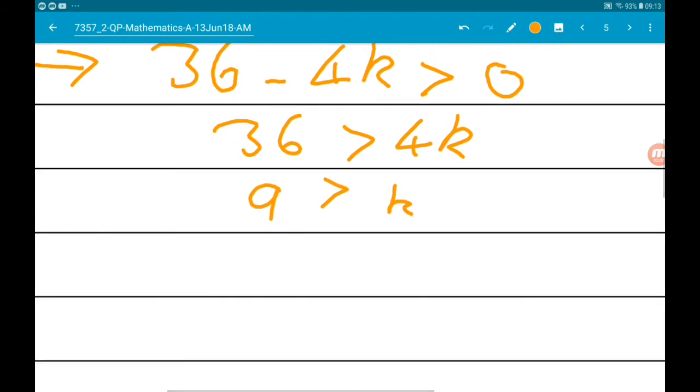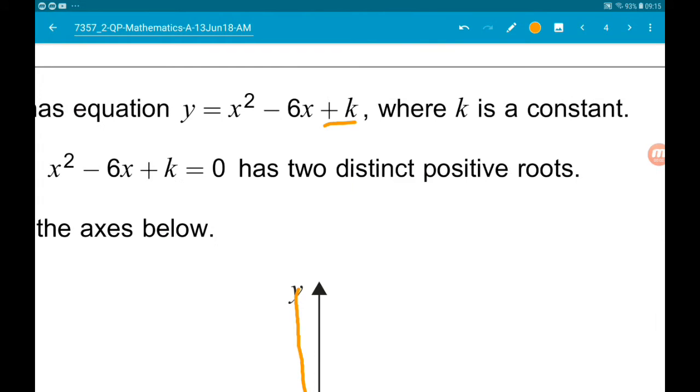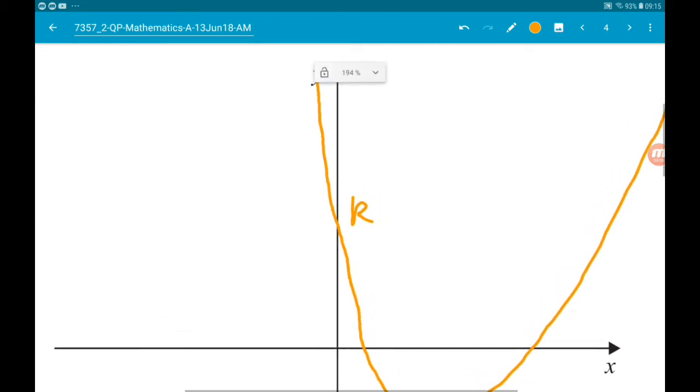So k is less than 9. But the story doesn't finish there. Remember that we got k is our y-intercept.